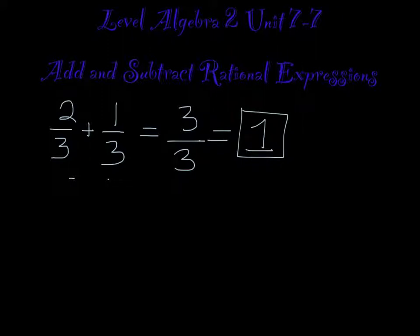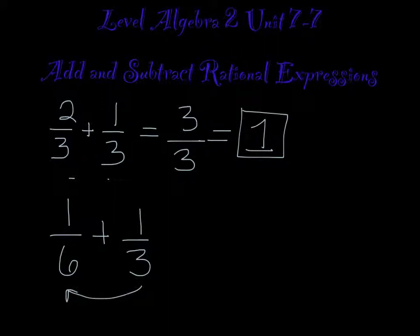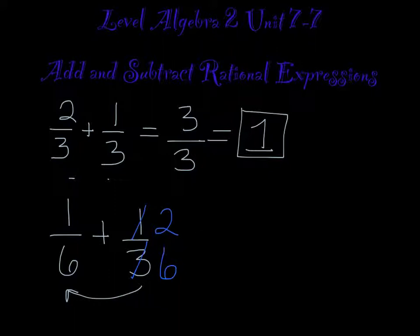So if you don't have the same denominator — suppose we're adding 1 sixth plus 1 third — you have to change your fraction so that you do have a common denominator. 3 does go into 6, so we can change this 3 to a 6 by multiplying it by 2, and I have to multiply the 1 by 2 as well. 2 sixths is the same thing as 1 third; you're just changing the way it's written. So now when I add 1 sixth and 2 sixths, that's 3 sixths, which reduces to 1 half.